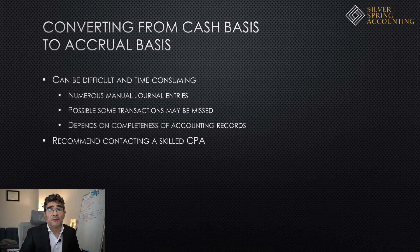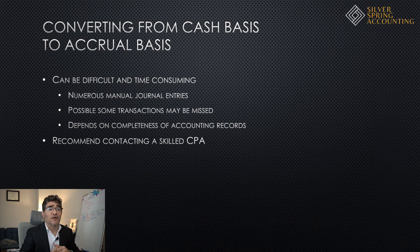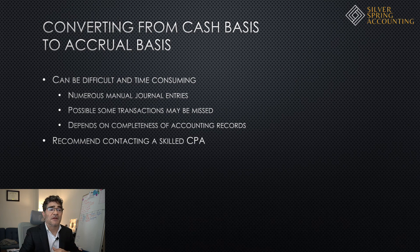This process can be difficult, time-consuming, and require many manual journal entries to properly reflect balances in the statement of financial position and statement of activities. It's also possible that transactions will be missed without reviewing all accounting records. The accuracy of the statements depends on the completeness and organization of the organization's accounting records and how well they are maintained.